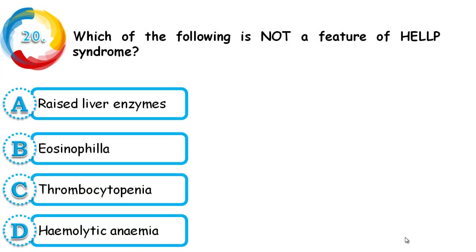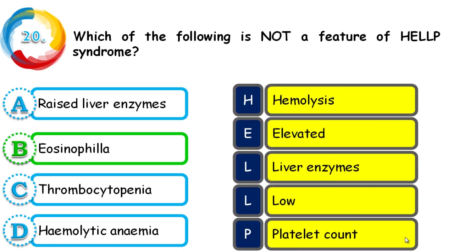Question 20: Which of the following is not a feature of HELLP syndrome — elevated liver enzymes, eosinophilia, thrombocytopenia, or hemolytic anemia? The correct answer is eosinophilia — it is not related to HELLP syndrome. The mnemonic HELLP stands for Hemolysis, Elevated Liver enzymes, and Low Platelet count. Hemolytic anemia results from hemolysis, and thrombocytopenia results from low platelet count.